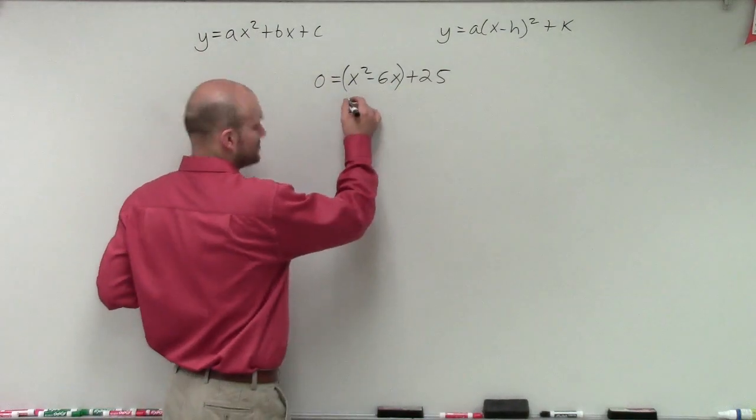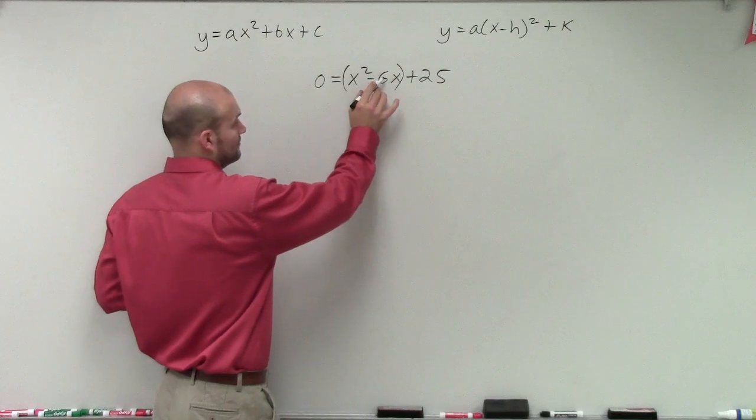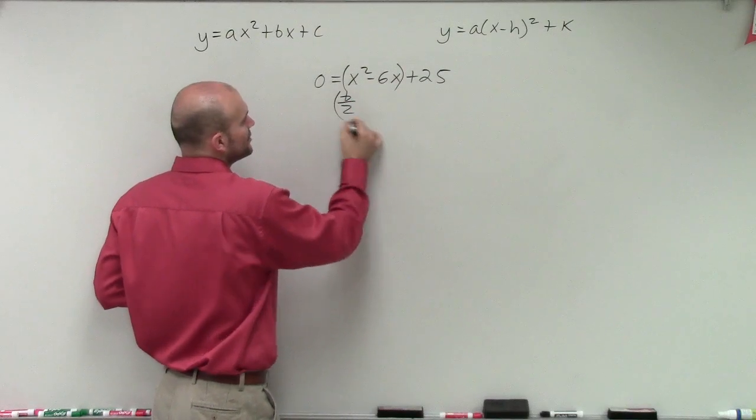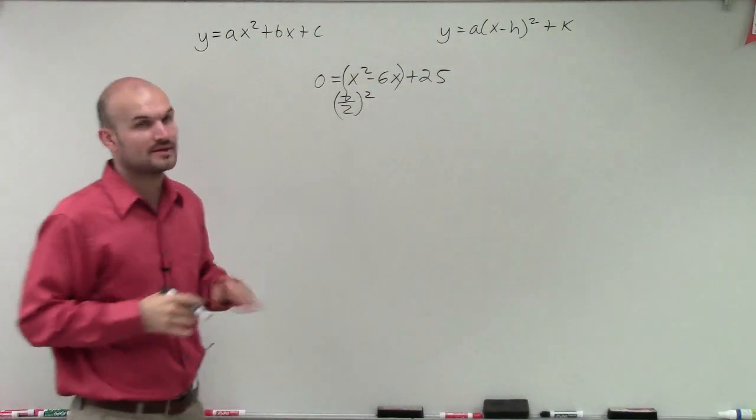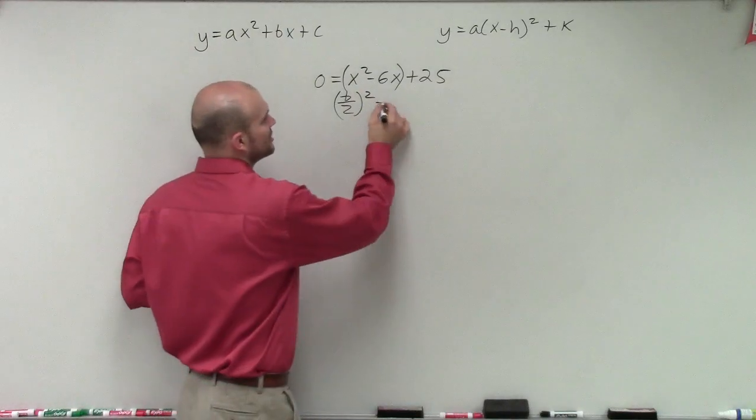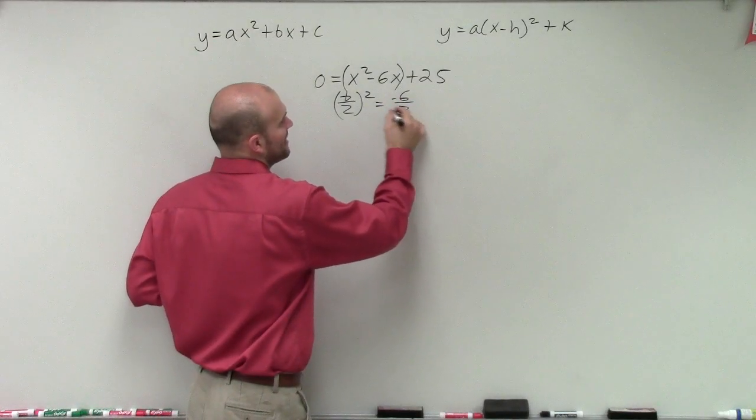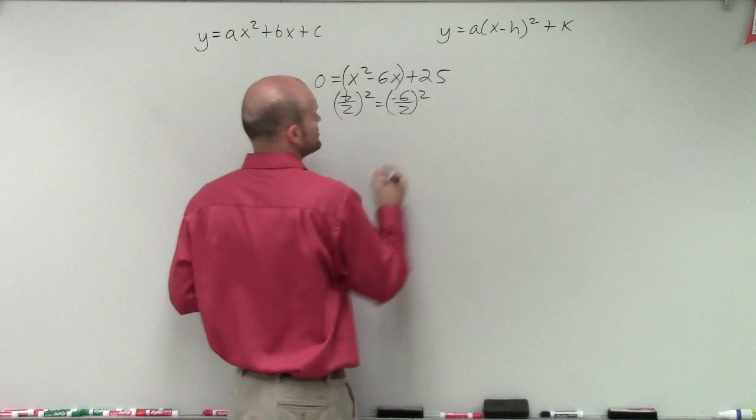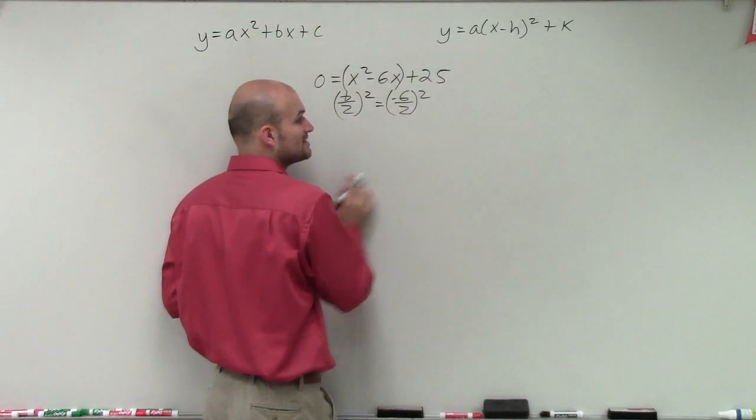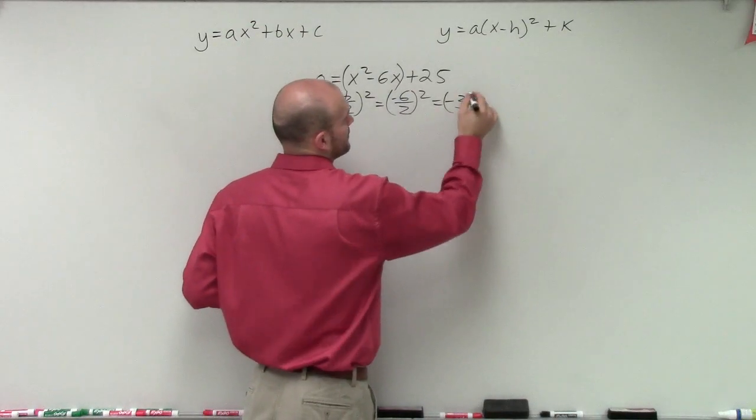So to do that, what I'm going to do is I'm going to take my b divided by 2 and square it. So b divided by 2 is going to equal negative 6 divided by 2. And then I square it. So negative 6 divided by 2 is negative 3 squared, which equals 9.